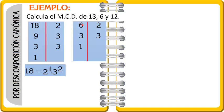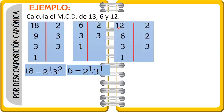De la misma manera con el número 6: 6 entre 2 = 3, 3 entre 3 = 1. Entonces 6 = 2¹ × 3¹. Con el tercer número: 12 entre 2 = 6, 6 entre 2 = 3, 3 entre 3 = 1. Entonces 12 = 2² × 3¹. ¿Por qué al cuadrado? Porque este número 2 se repite dos veces.